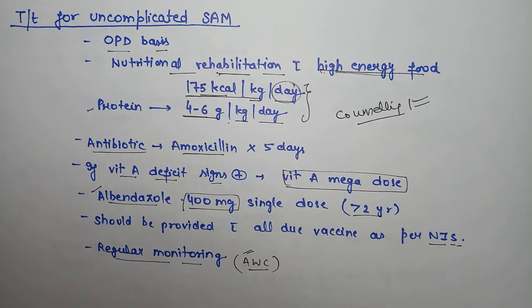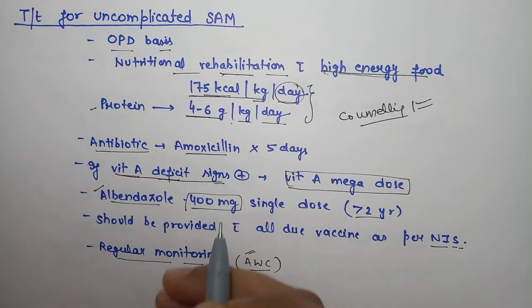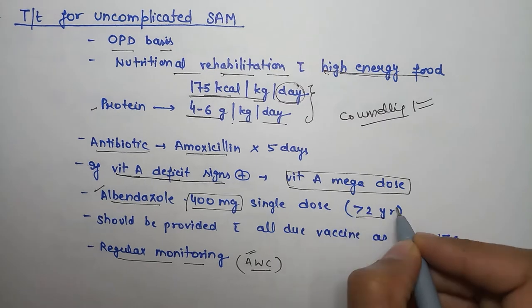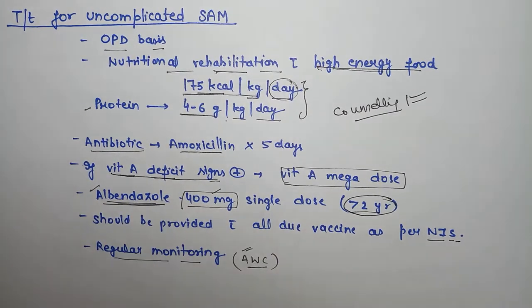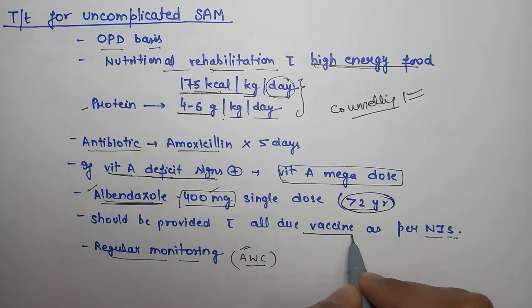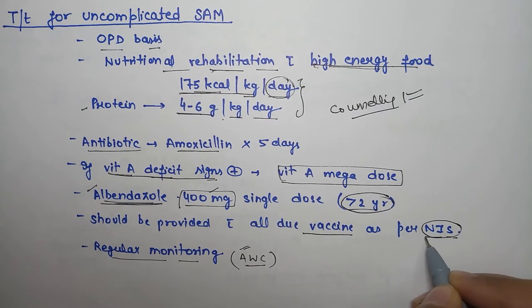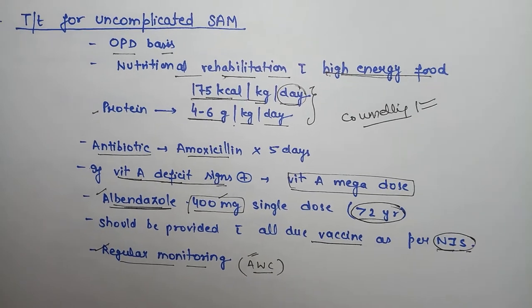Give antibiotics like amoxicillin for 5 days. If there are vitamin A deficiency signs like xerophthalmia or keratomalacia, give vitamin A. For deworming, give 400mg albendazole. If the child is not vaccinated, vaccinate as per National Immunization Schedule. Then do regular monitoring with help of Anganwadi workers.